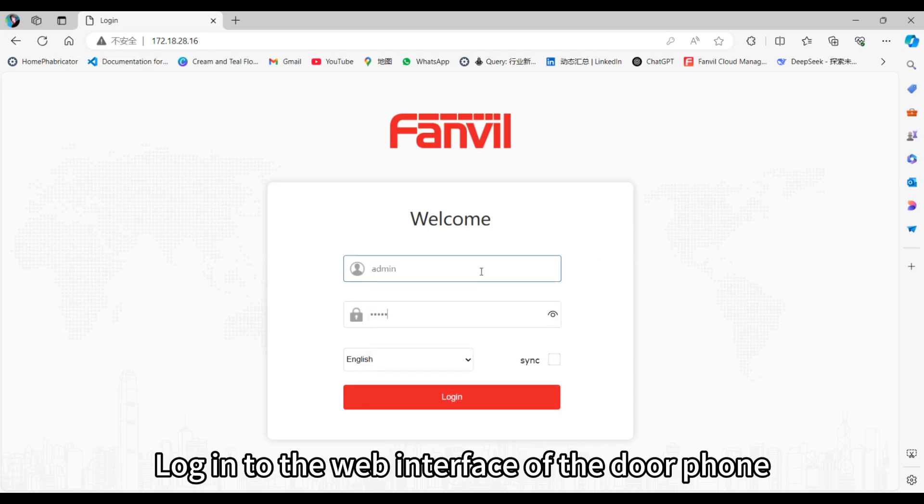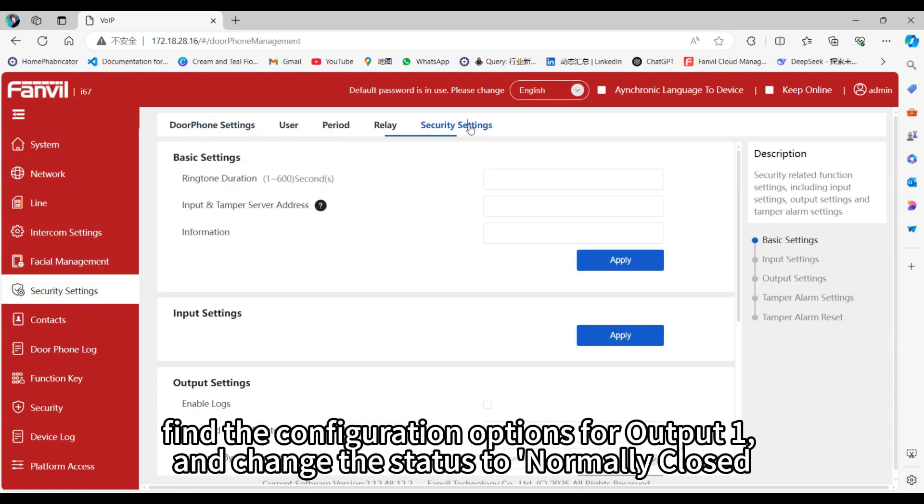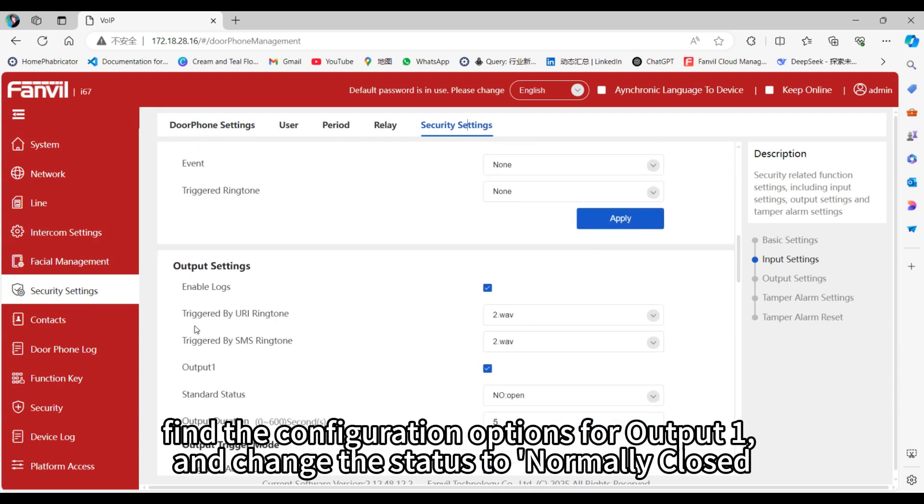Log into the web interface at the door phone. Go to security settings. Find the configuration options for output 1 and change the status to normally close.